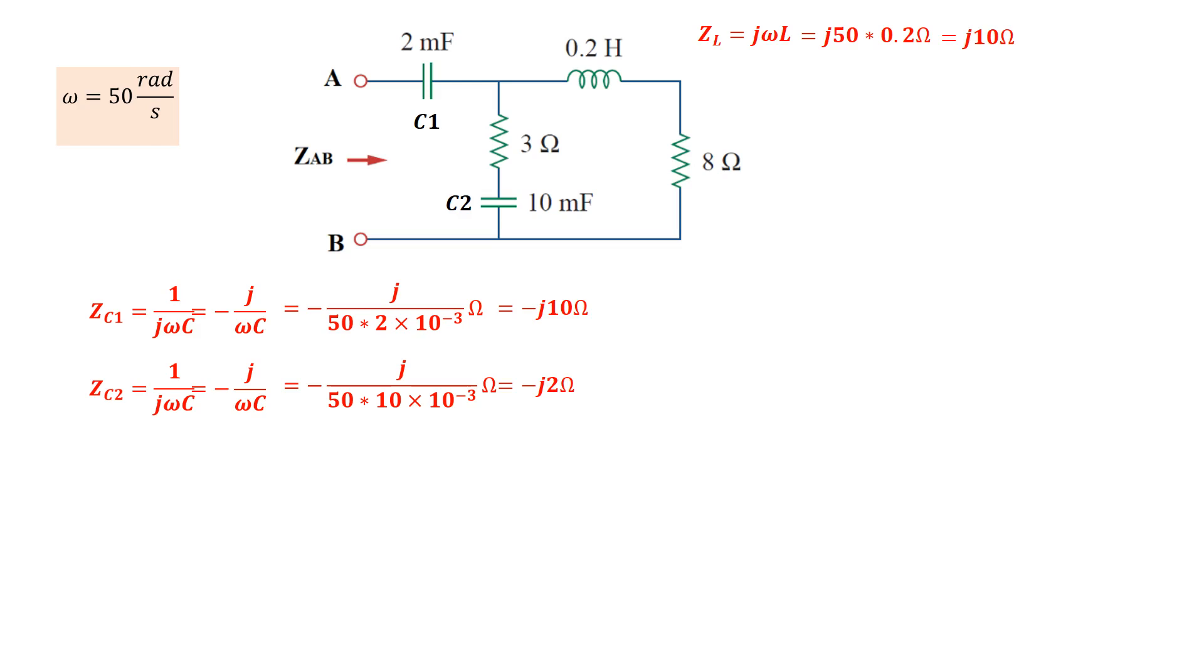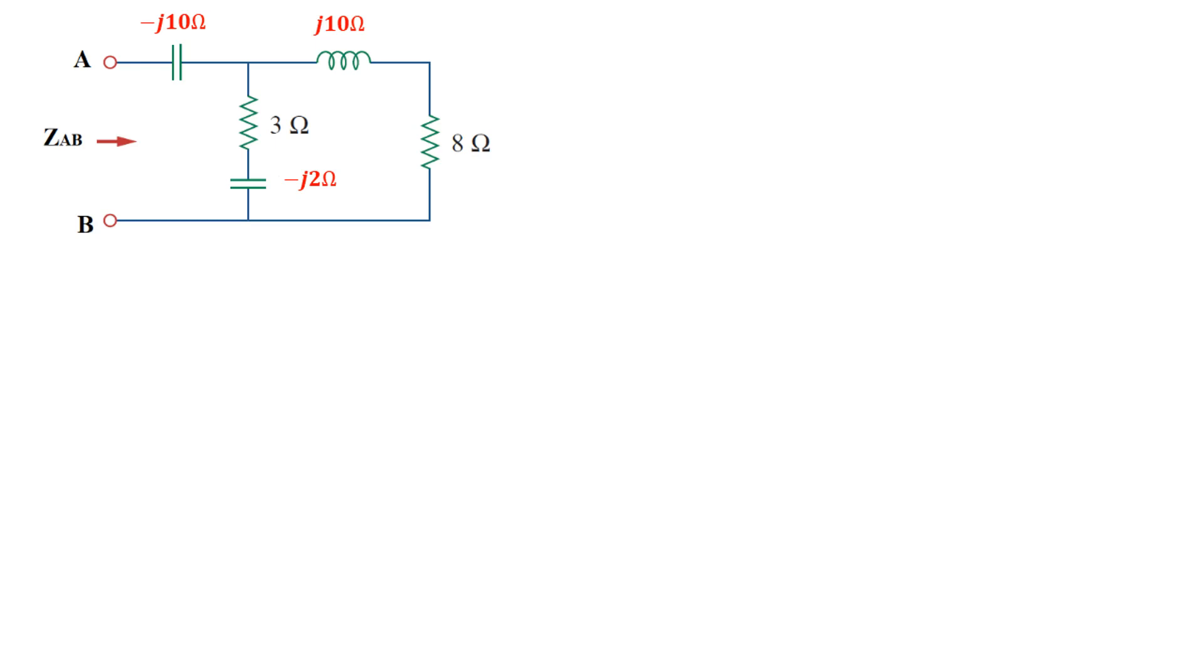Let's redraw this circuit with respect to impedances instead of the capacitor and the inductor values. So, here's my circuit right here redrawn, and all I've done is replace the capacitor and the inductor values with their respective impedances we just calculated.